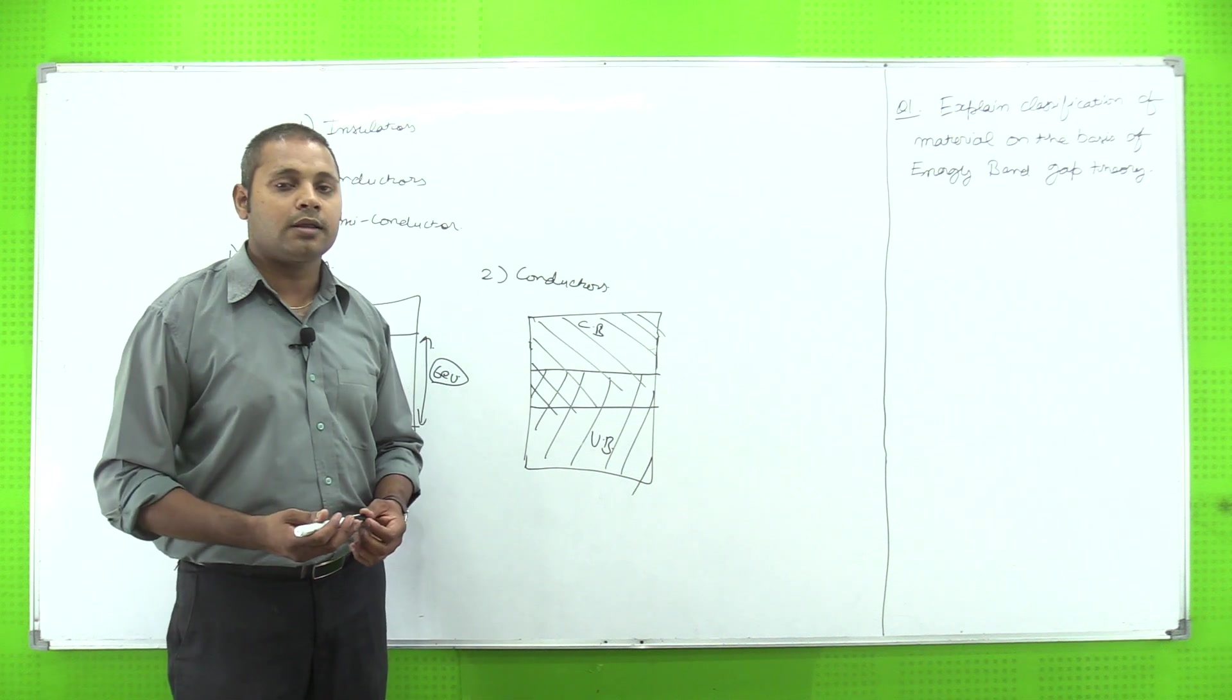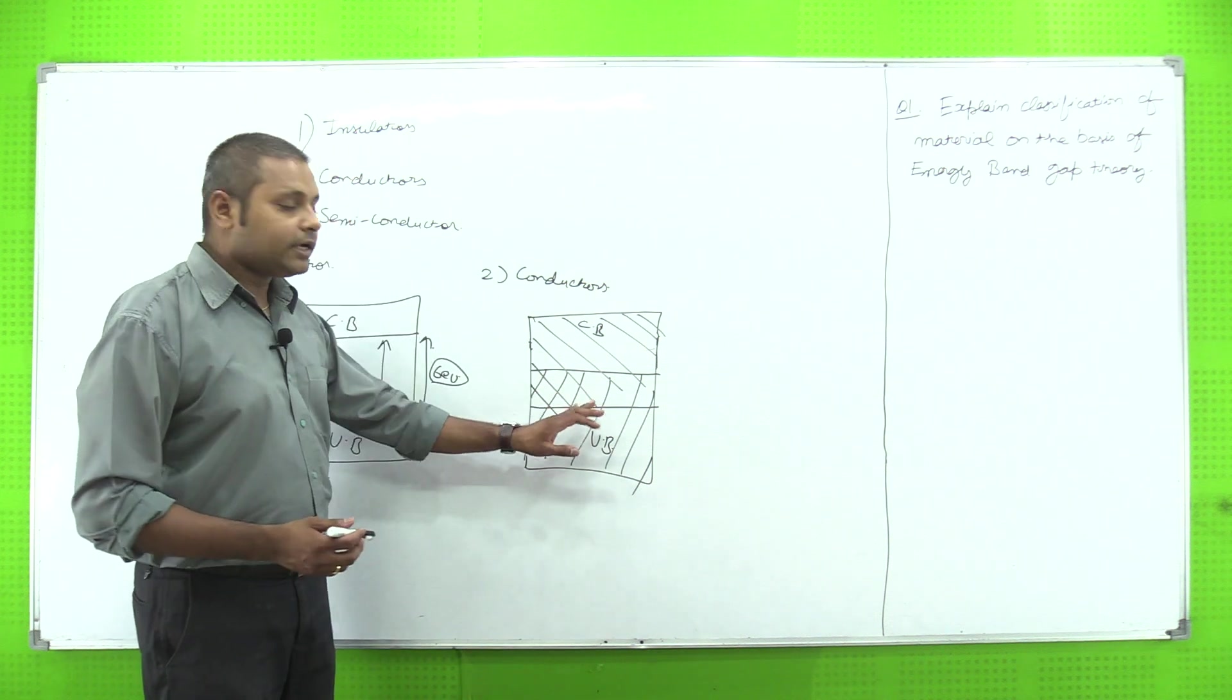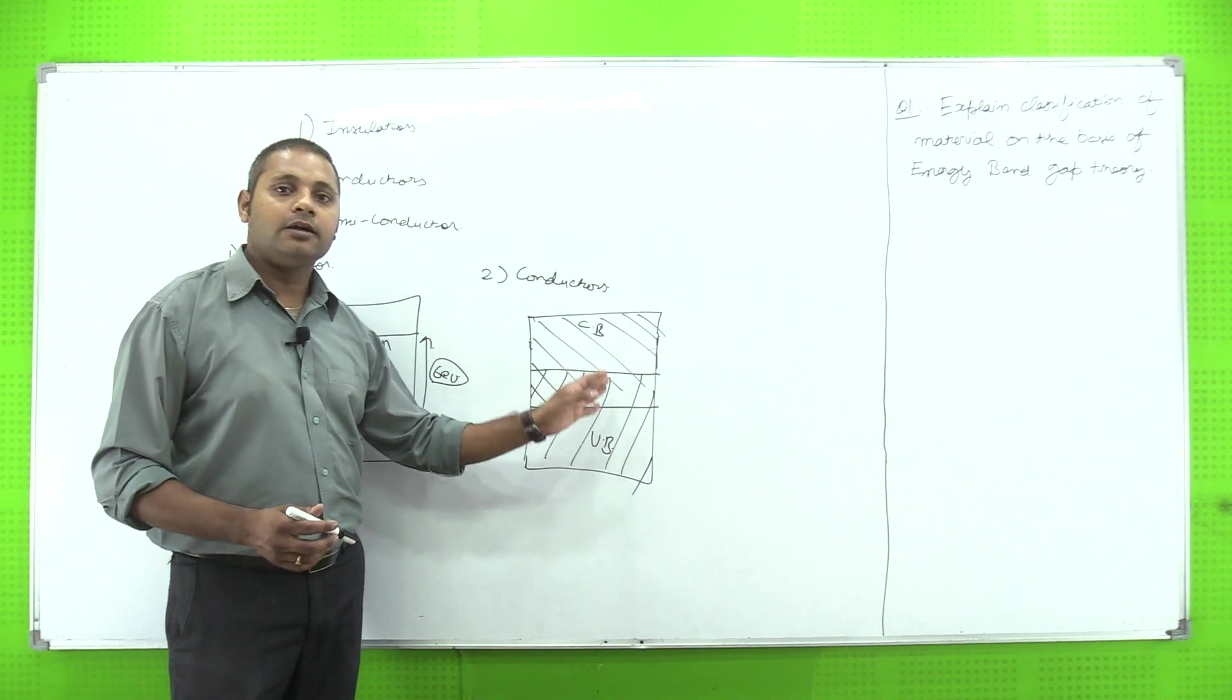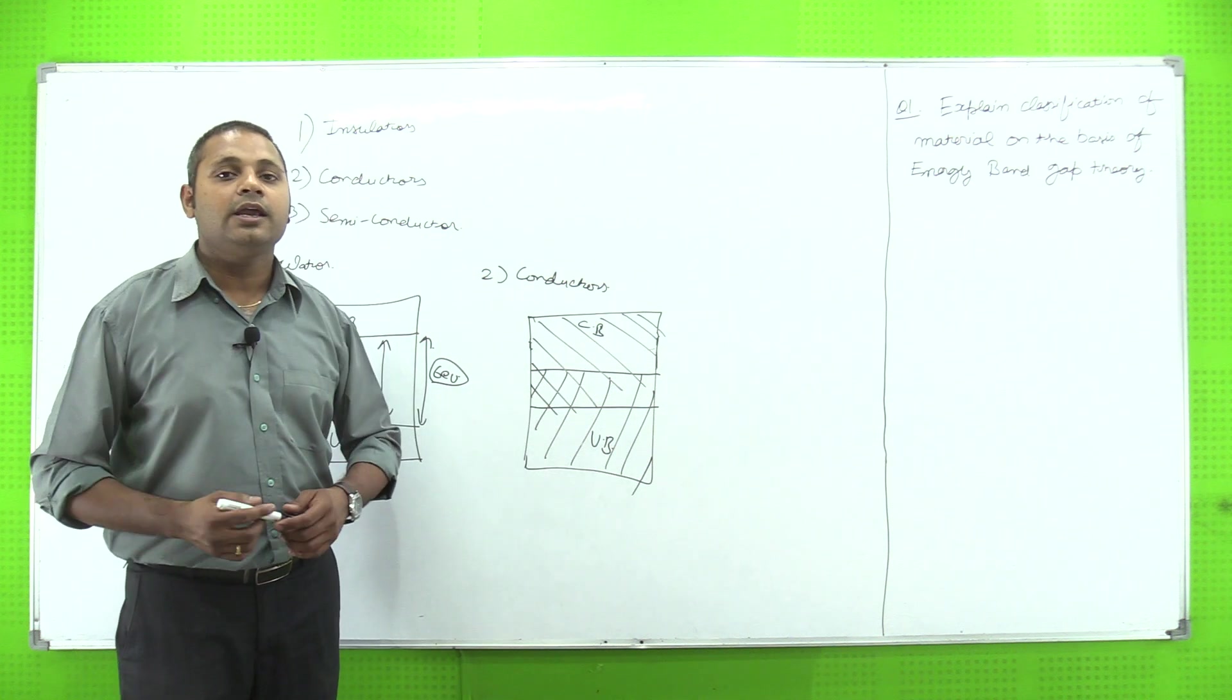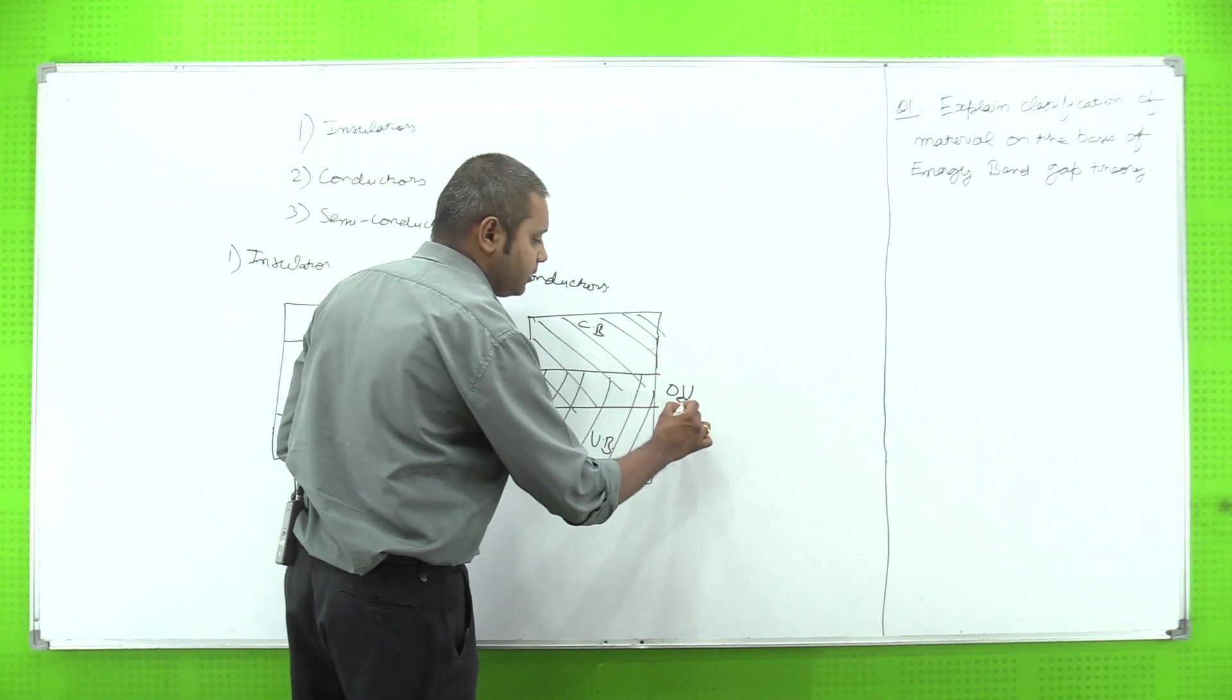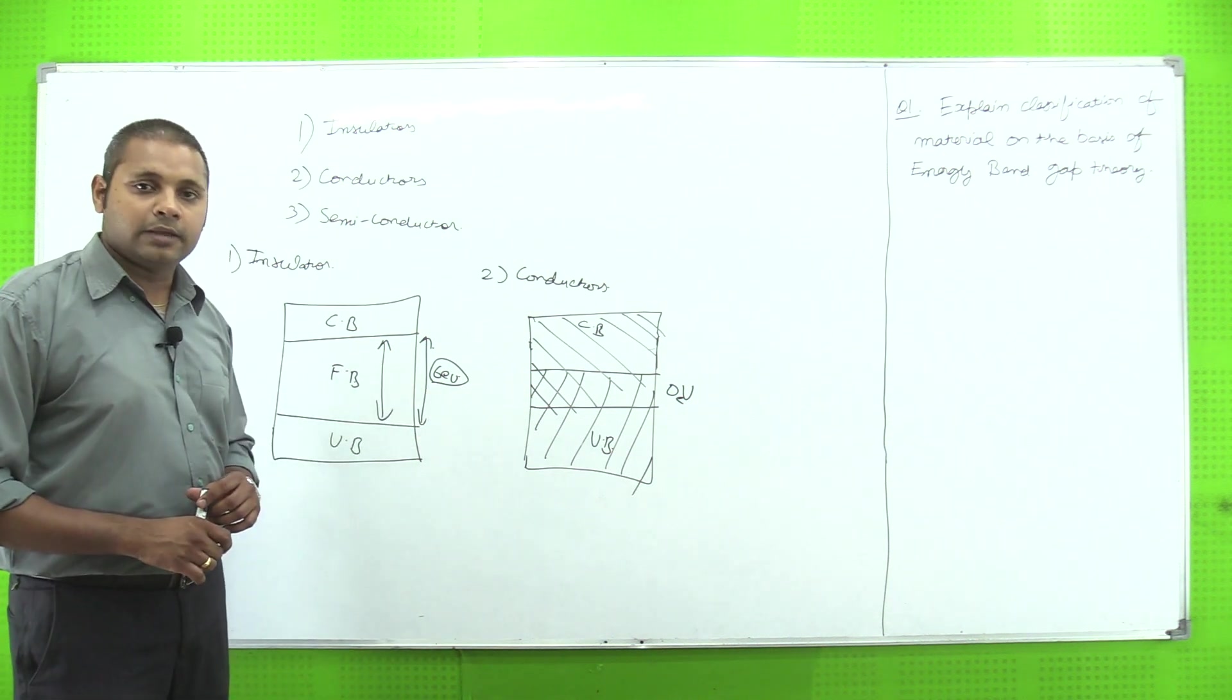Agar mujhe current flow karana hai, toh current flow karane ke liye mujhe apne electron ko ek particular direction dena hoga. For that, we have to provide the external current or external voltage. Otherwise, if we give the heat, if we provide heat to the conductors, it starts conducting heat also. Yahaan par easily diagram se mujhe pata chal raha hai - in conductors we have 0 electron volt forbidden gap.